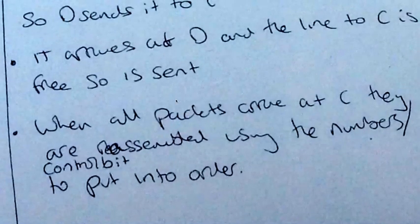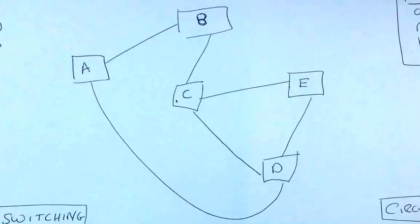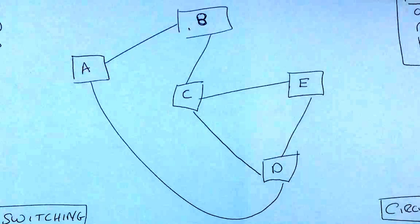When all the packets arrive at C, they are reassembled using the numbers and the control bit to put it in order. So we reassemble them and put them back into order. So eventually they will all arrive in this destination. So some packets might go to B and then directly to C. Some packets will come a longer route and therefore they might get there in a different order. At the end, they will be put all together. That is essentially what packet switching is.